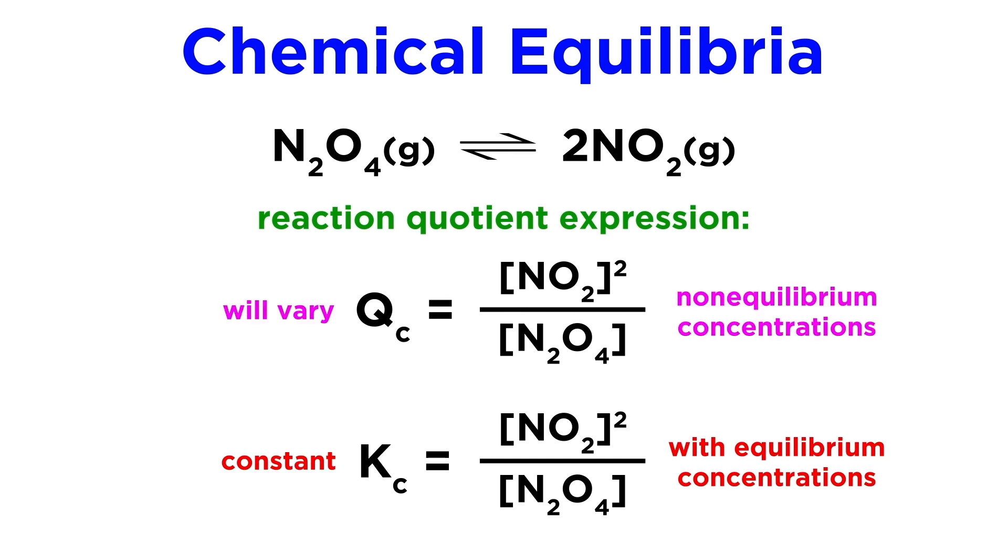We should be able to calculate either Qc or Kc for any set of concentrations. We simply plug them into the reaction quotient expression. If they are equilibrium concentrations, we get Kc, the equilibrium constant. If they are non-equilibrium concentrations, we get Qc, the reaction quotient.